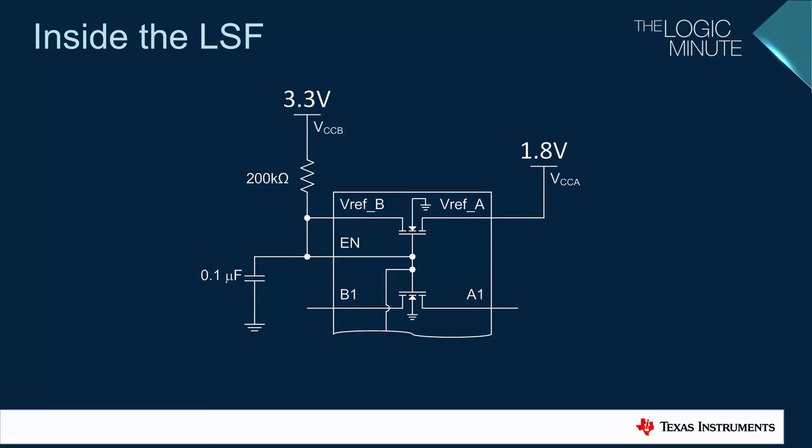The reference FET is diode connected, meaning that as long as the voltage from VrefB to VrefA is larger than the FET's threshold value, current will conduct from B to A. The 200 kiloohm resistor limits the current through the reference FET to just a few microamps, which will flow from supply B through the reference FET and into supply A, as indicated by the red arrows.